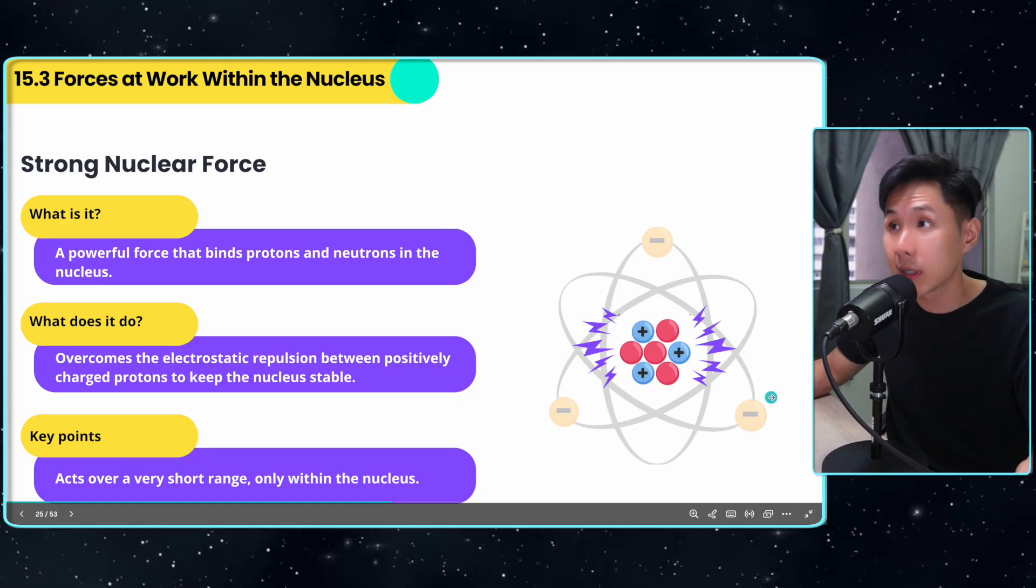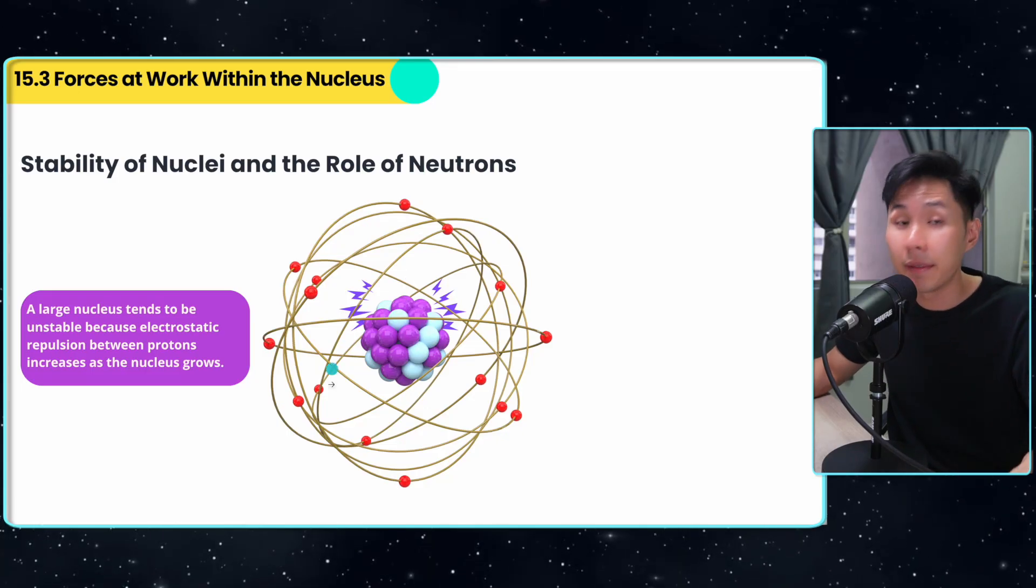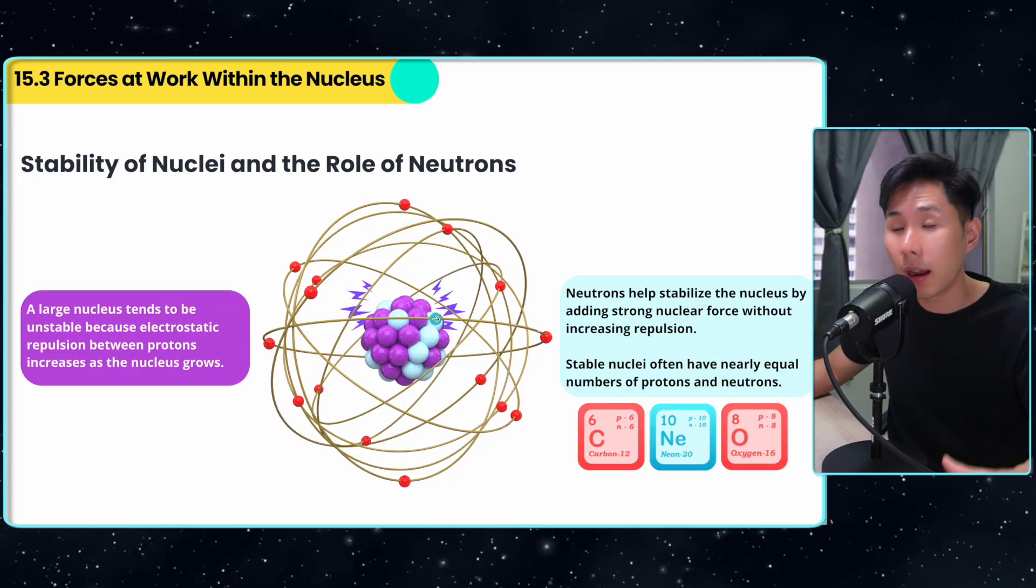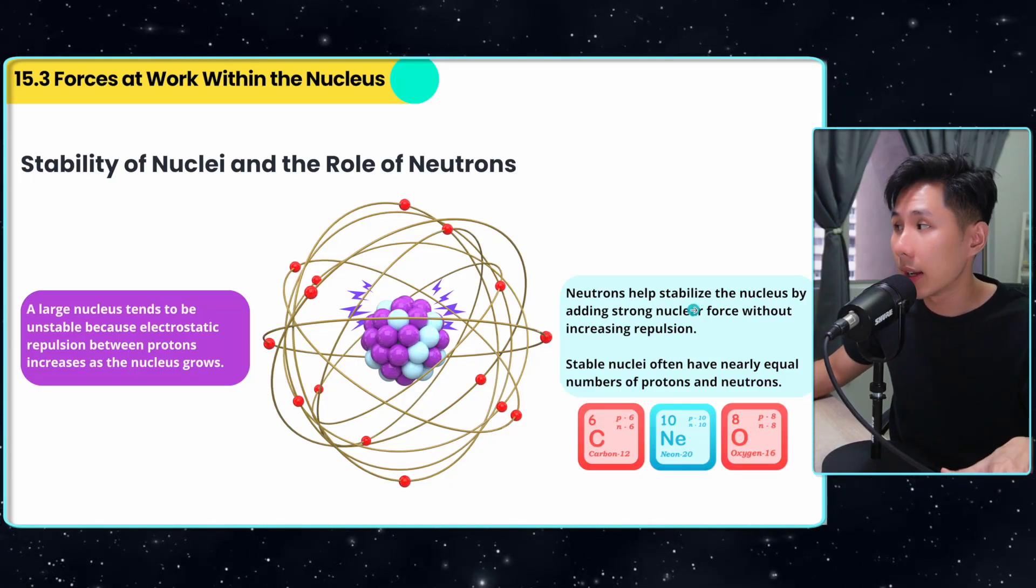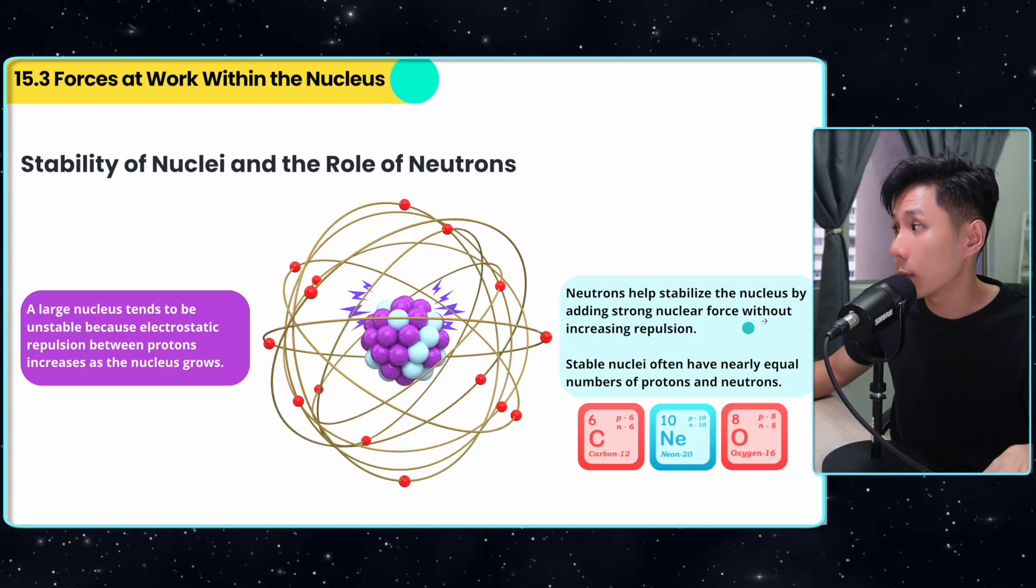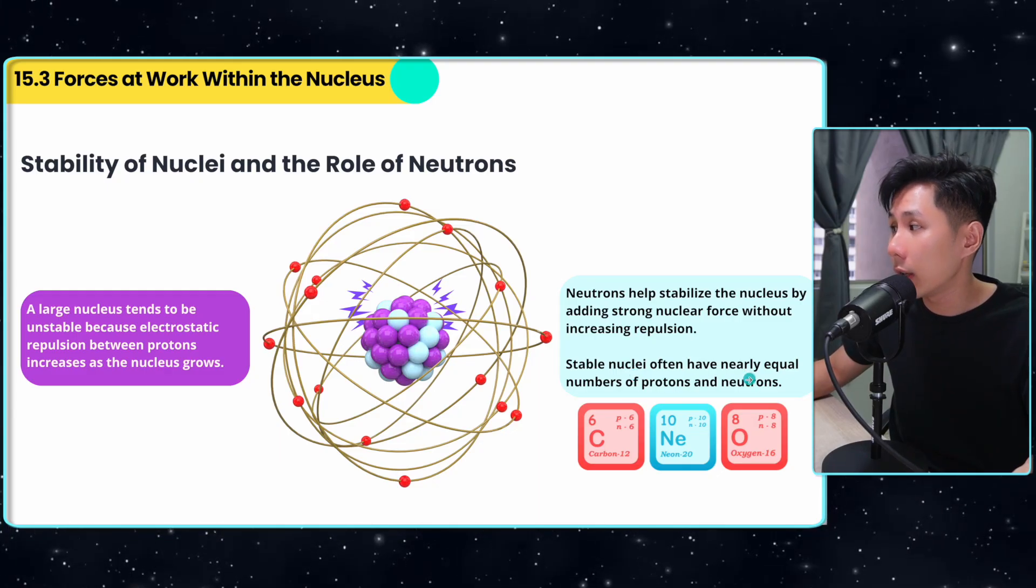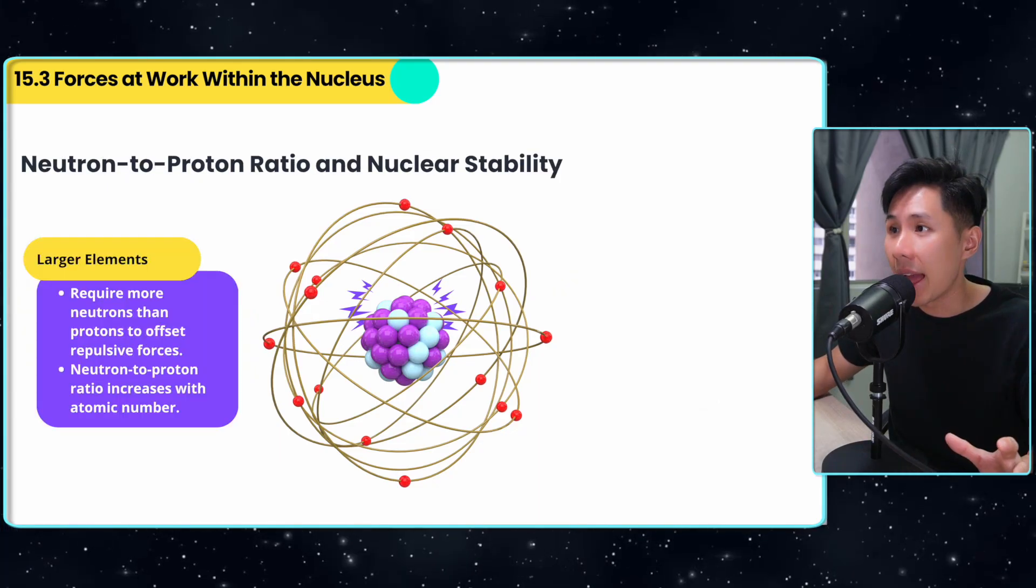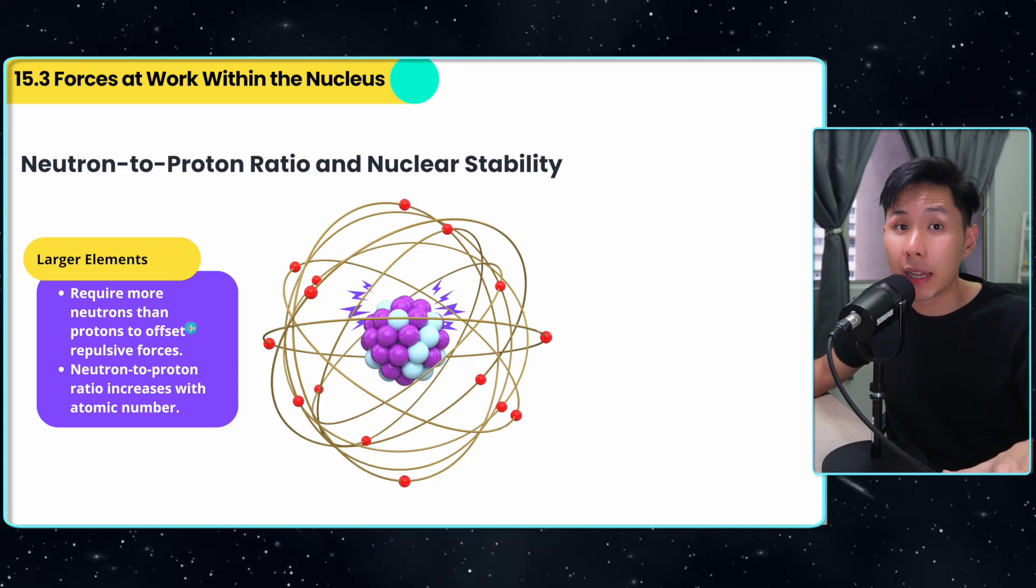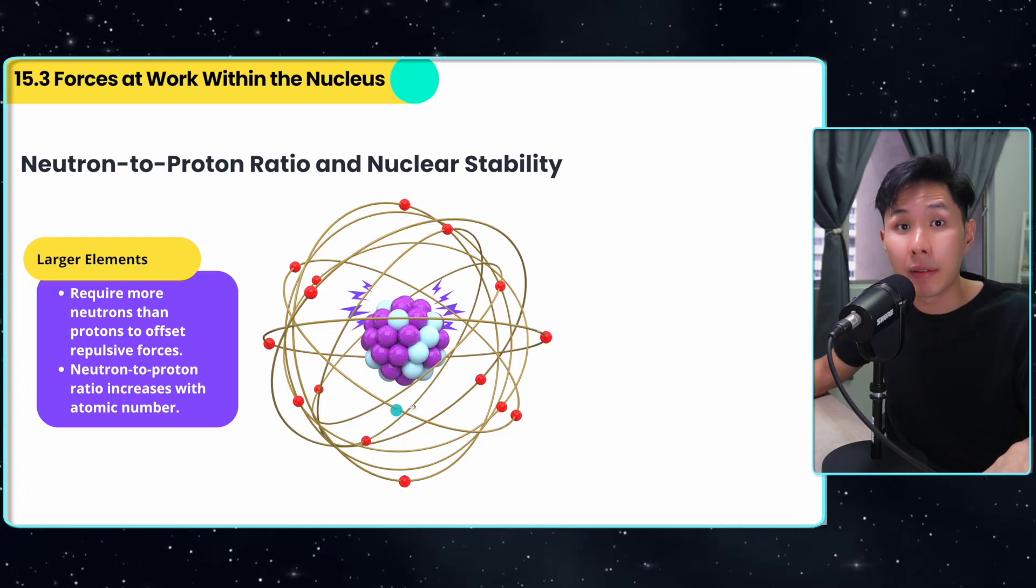The key point is that it acts over a very short range, only within the nucleus. So a large nucleus tends to be unstable because more protons mean electrostatic repulsion will be greater. Neutrons are the ones that counteract the instability by providing additional nuclear force without increasing repulsion, because they don't have charge. Stable nuclei often have equal numbers of protons and neutrons. For larger elements, it requires more neutrons than protons to offset the repulsive forces. Neutron to proton ratio increases with atomic number.